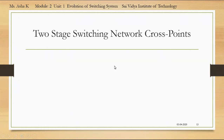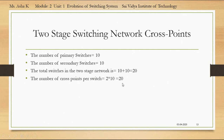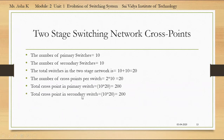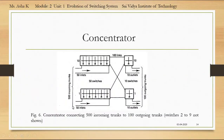The cross point calculations for the two-stage switching network: the number of primary switches is 10 and the number of secondary switches is 10, giving a total of 20 switches. The number of cross points per switch is 2×10 = 20. Total cross points in the primary stage: 10×20 = 200. Total cross points in the secondary stage: 10×20 = 200. Therefore, the total cross points required = 200 + 200 = 400 cross points.